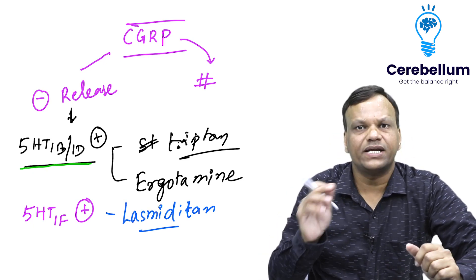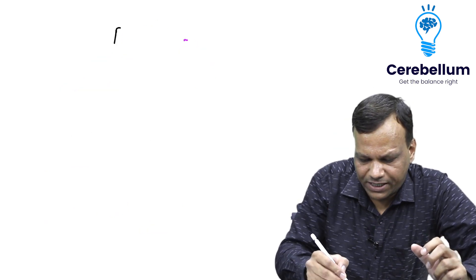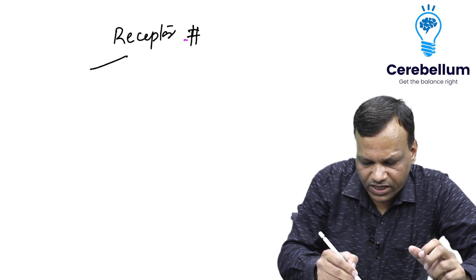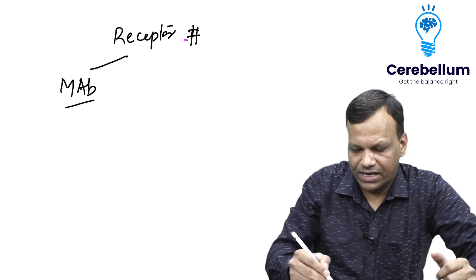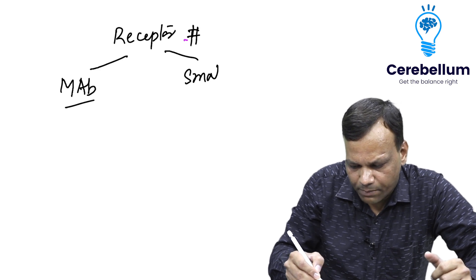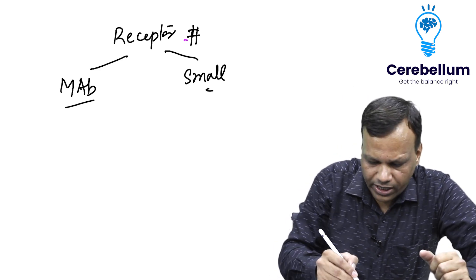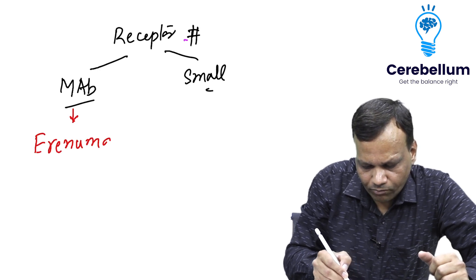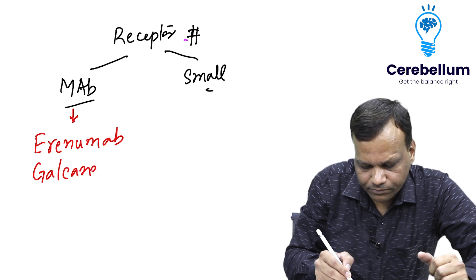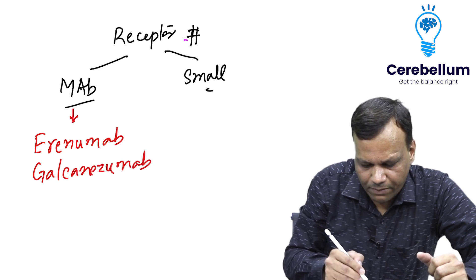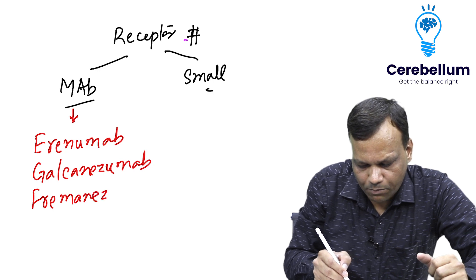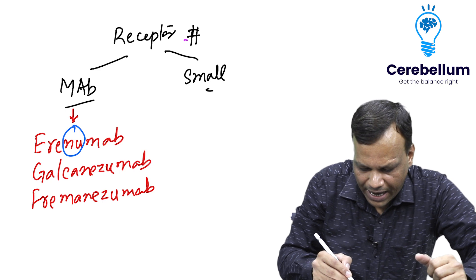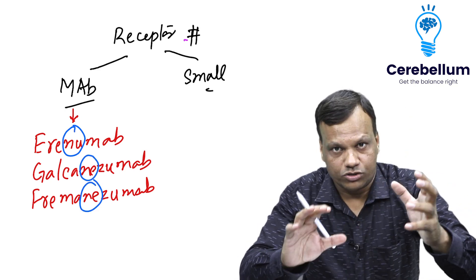Now coming to drugs which inhibit the action of CGRP — that is, CGRP receptor blockers. There are two types: monoclonal antibodies against CGRP, and small molecule inhibitors of CGRP receptors. The monoclonal antibody examples include erenumab, galcanezumab, and fremanezumab. You can see all of them contain 'nu' or 'ne' in the name, which stands for neurons.